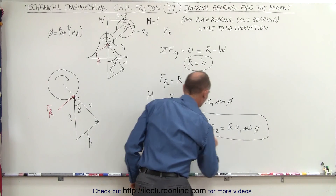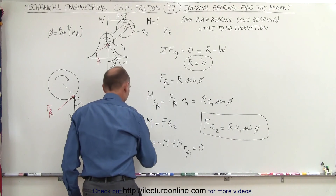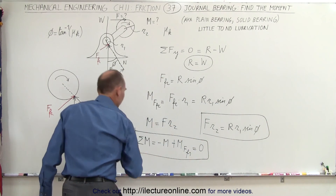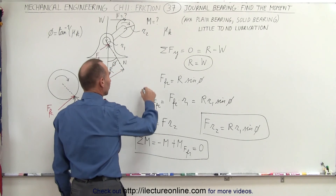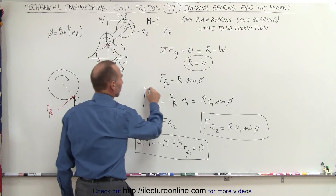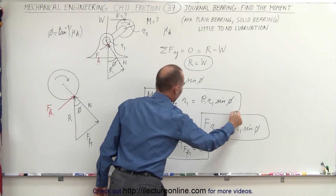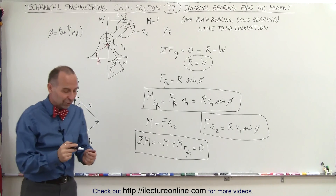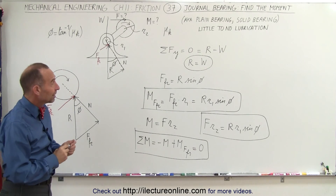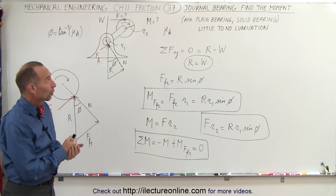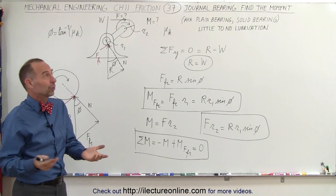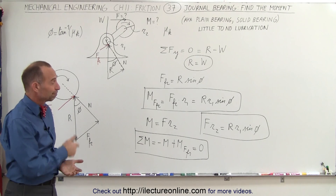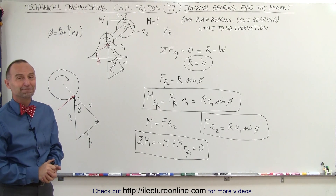There are two ways of expressing the sum of moments, or you can simply calculate the moment caused by friction directly. This gives a good understanding of how to work with journal bearings — or solid bearings — and that is how it is done.